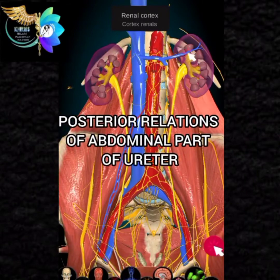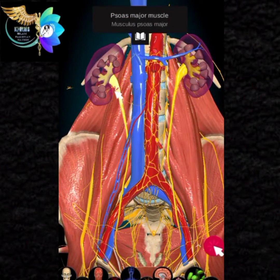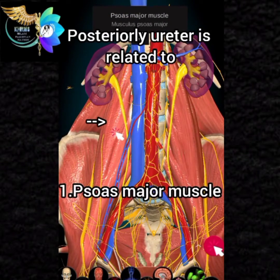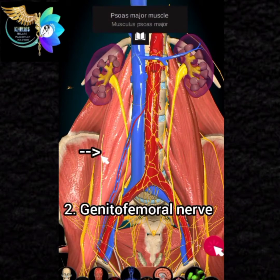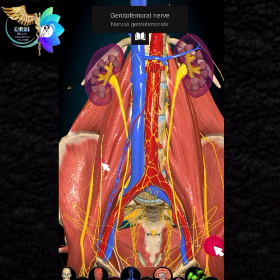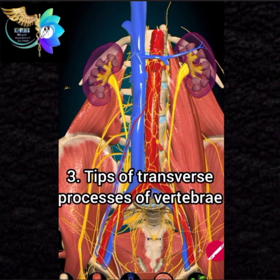Posterior relations of the abdominal part of the ureter: 1. Psoas major muscle. 2. Genitofemoral nerve. 3. Tips of the transverse processes of the vertebrae.